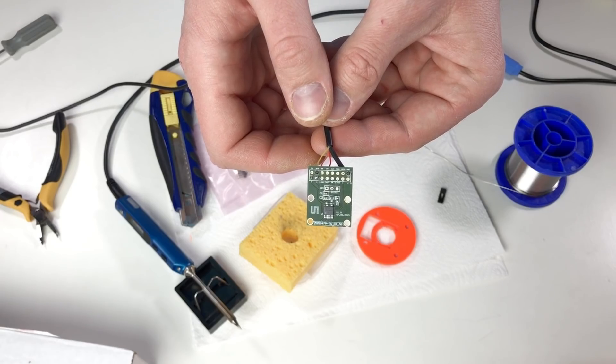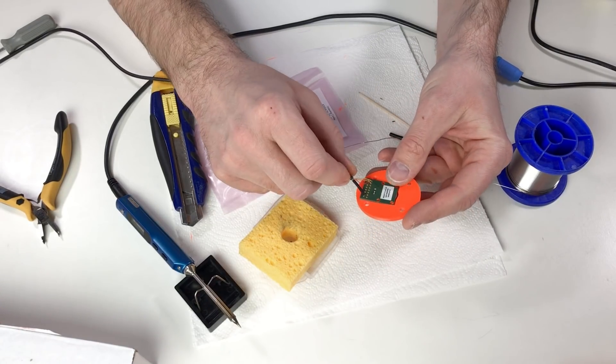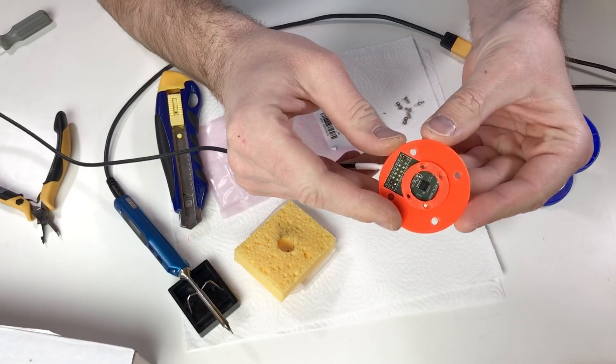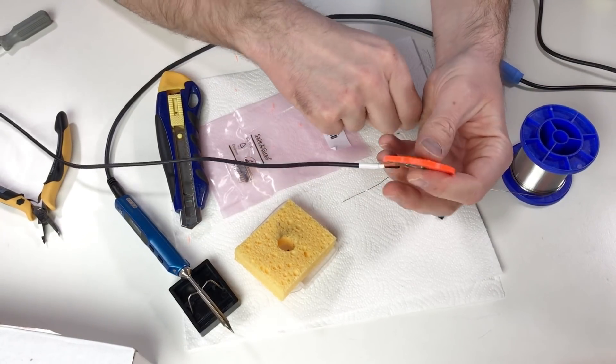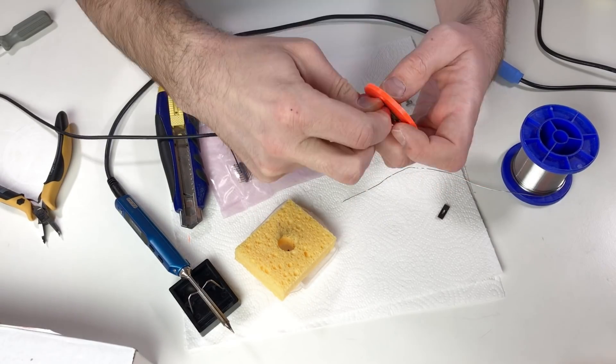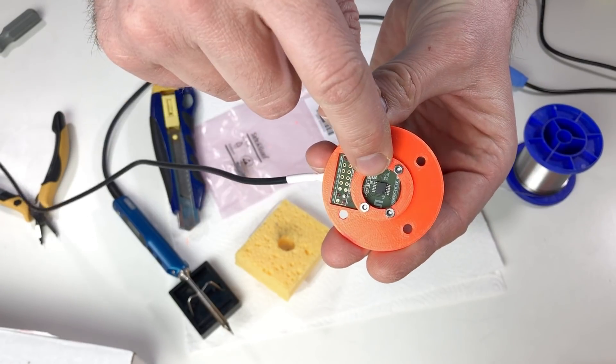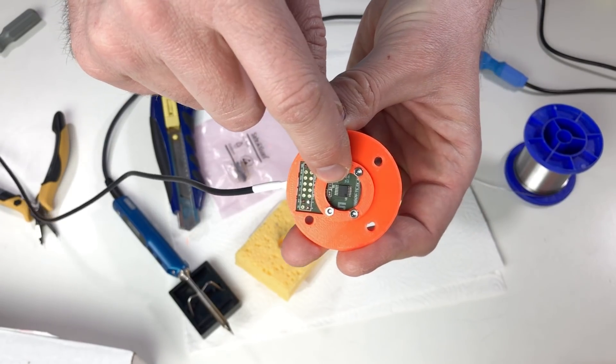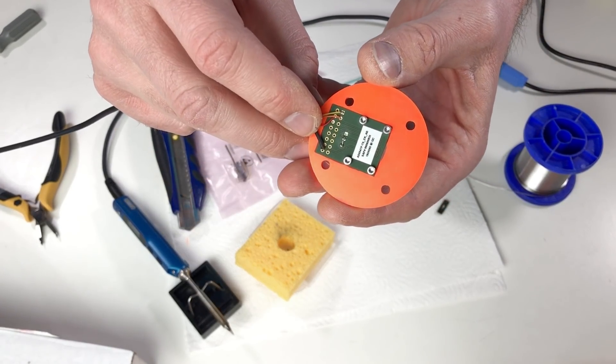This is how it looks when the soldering is done. And now we can install this encoder on this encoder holder. Like this. And now we can fix it with the tiny M2 screws. Nuts go here. Screw go here. This is how it looks when it's fixed with the screws. You see that the encoder chip is right in the middle. Yeah! And now what is left is to install it on the axis number 1.